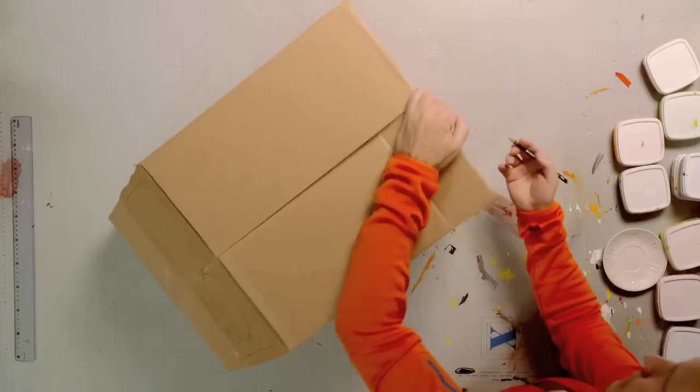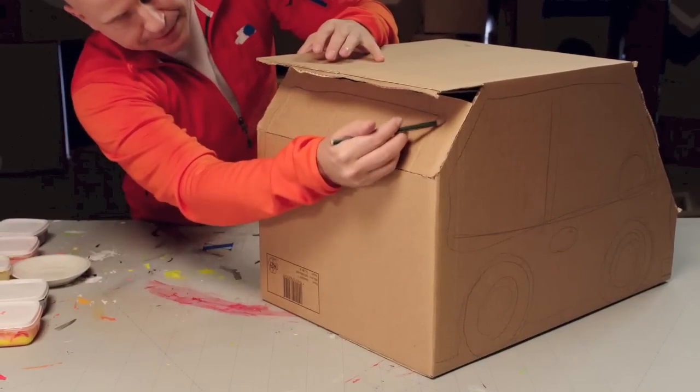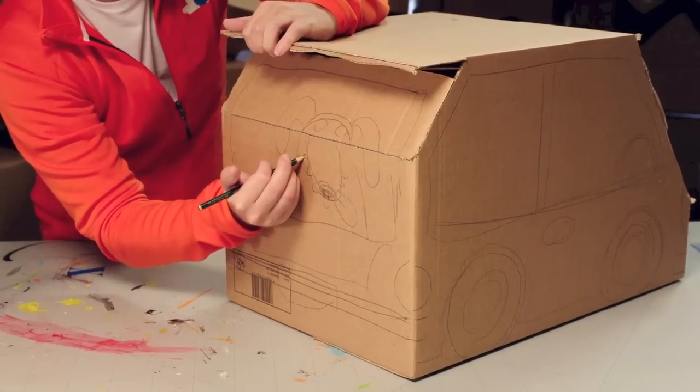On the back of the car, we'll need a window, a bumper, and another license plate. And check this out! Doodle brought his dog along for the ride.